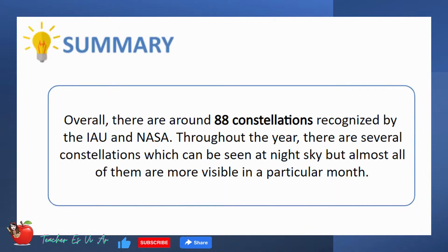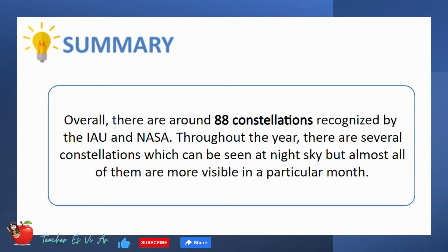In summary, there are around 88 constellations recognized by the IAU and NASA. Throughout the year, there are several constellations that can be seen in the night sky, but almost all of them are more visible in a particular month.